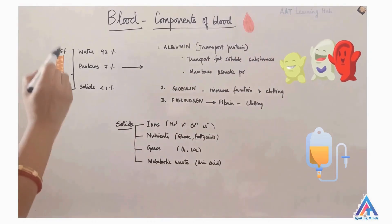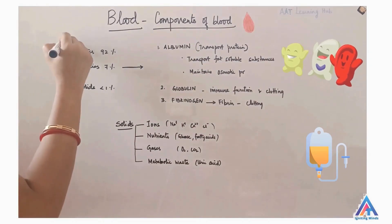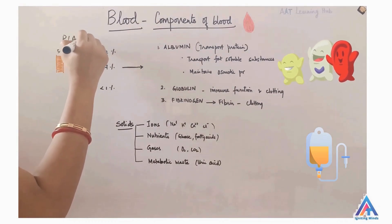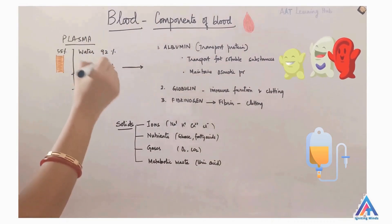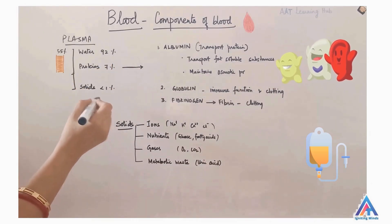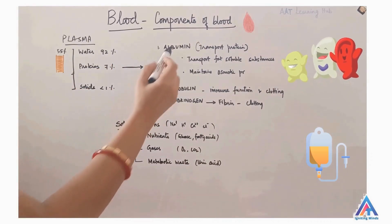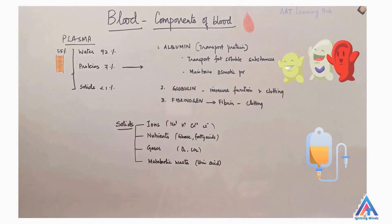Now let's see what plasma is made up of. Plasma has about 92% water, 7% protein and less than 1% solids. There are three main proteins present in plasma.